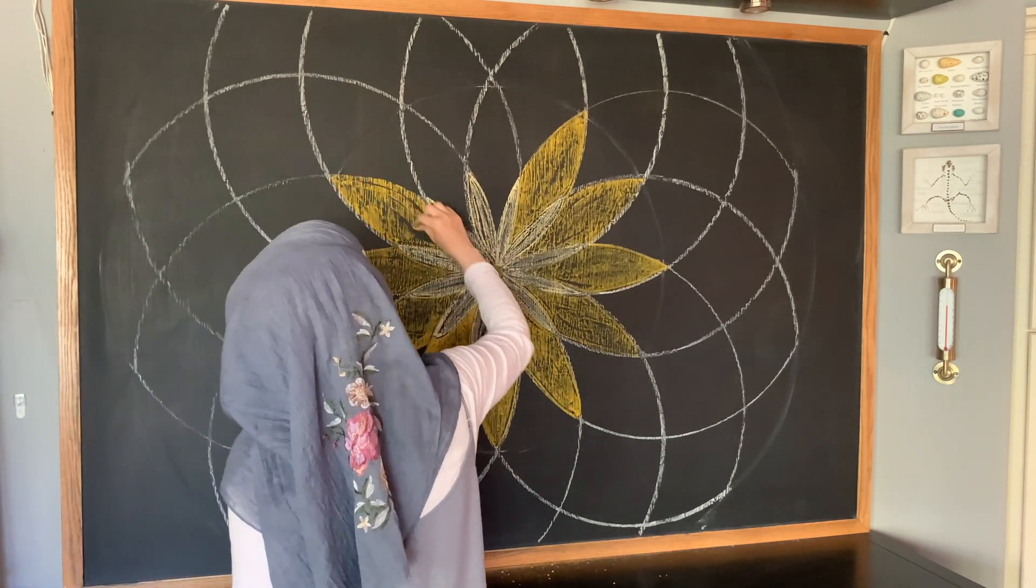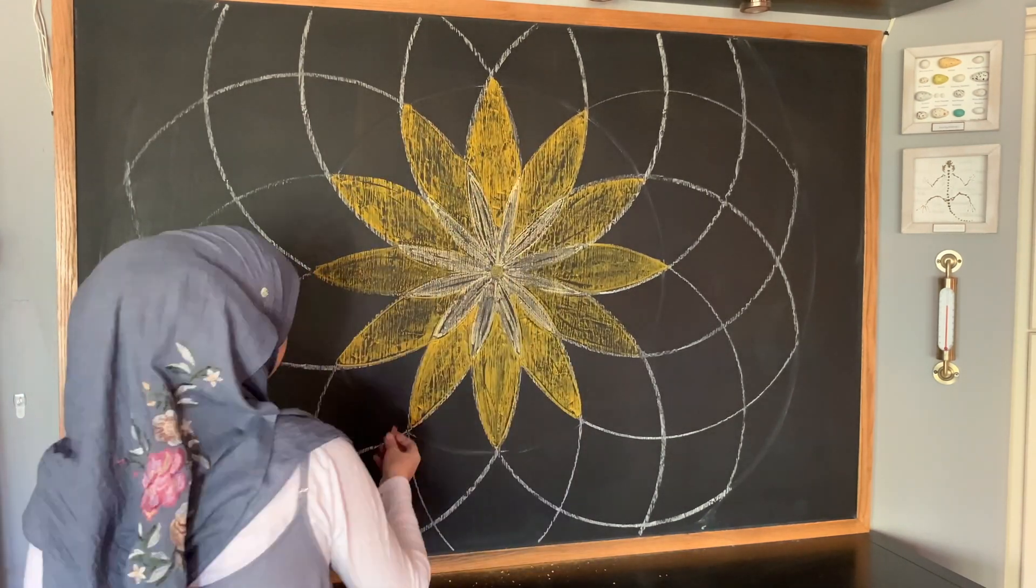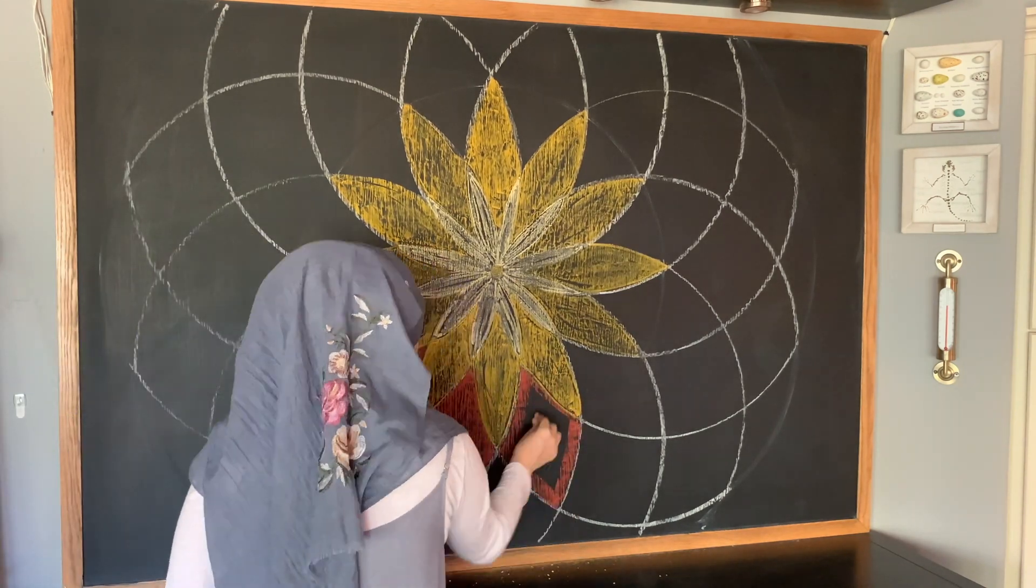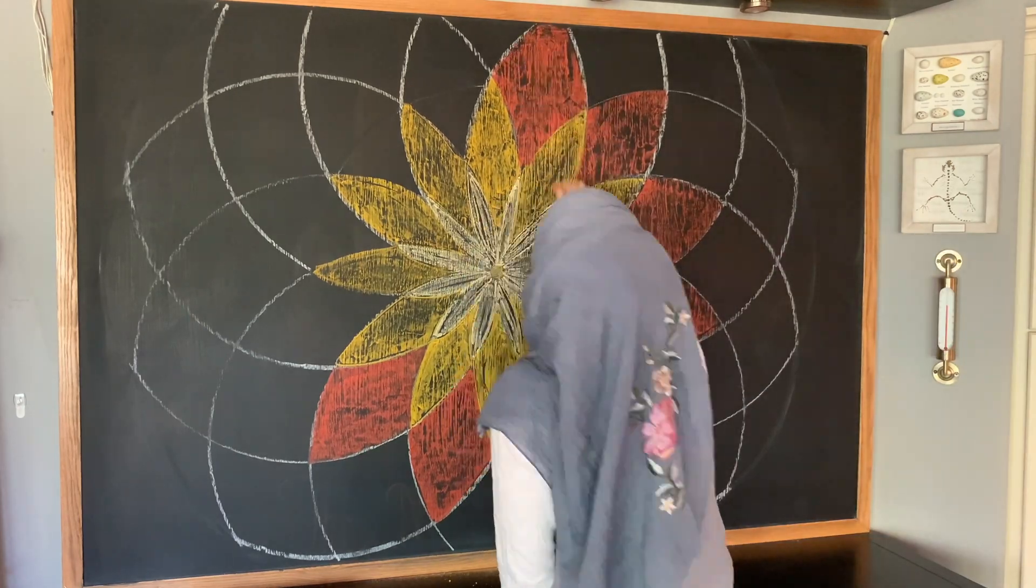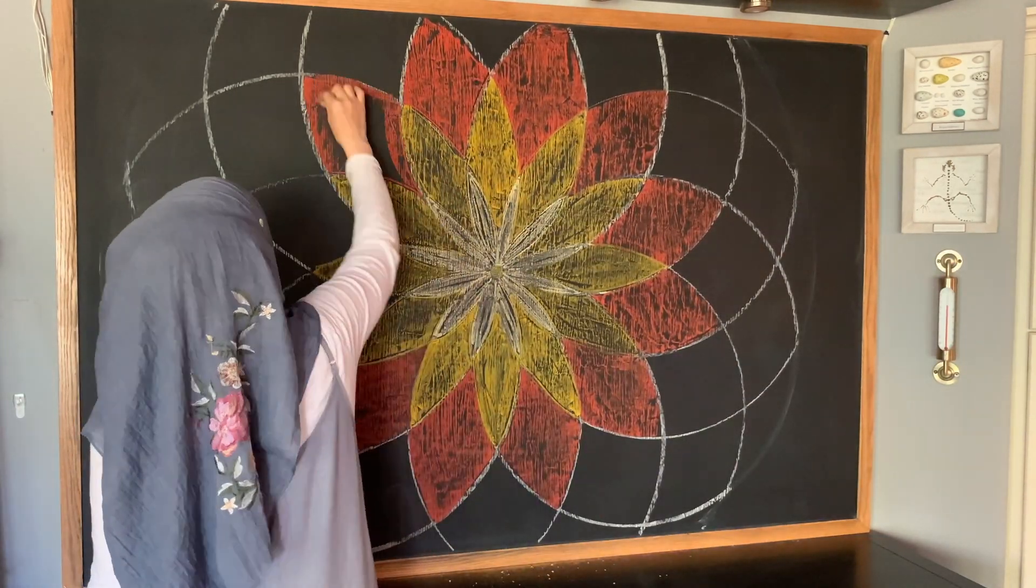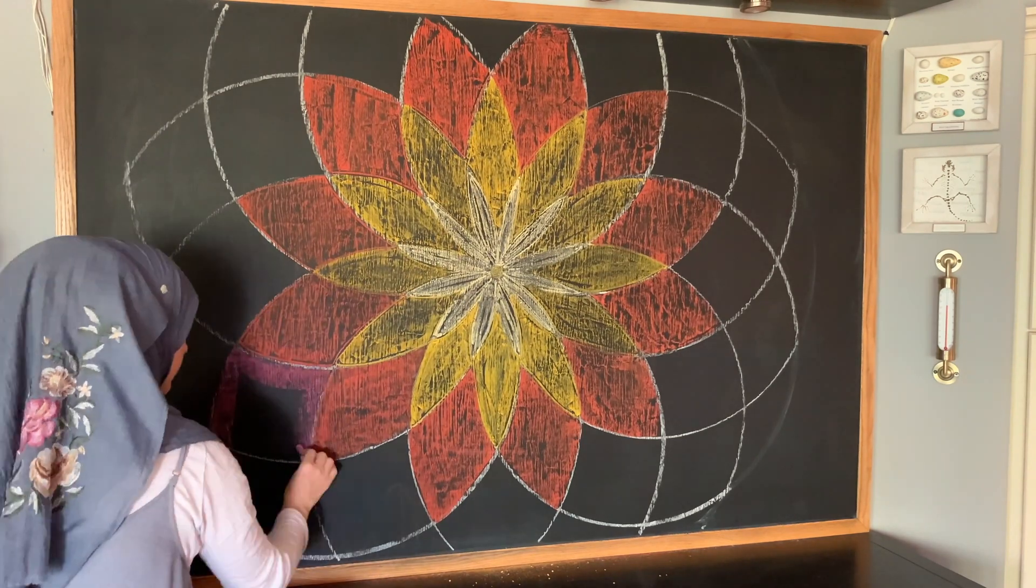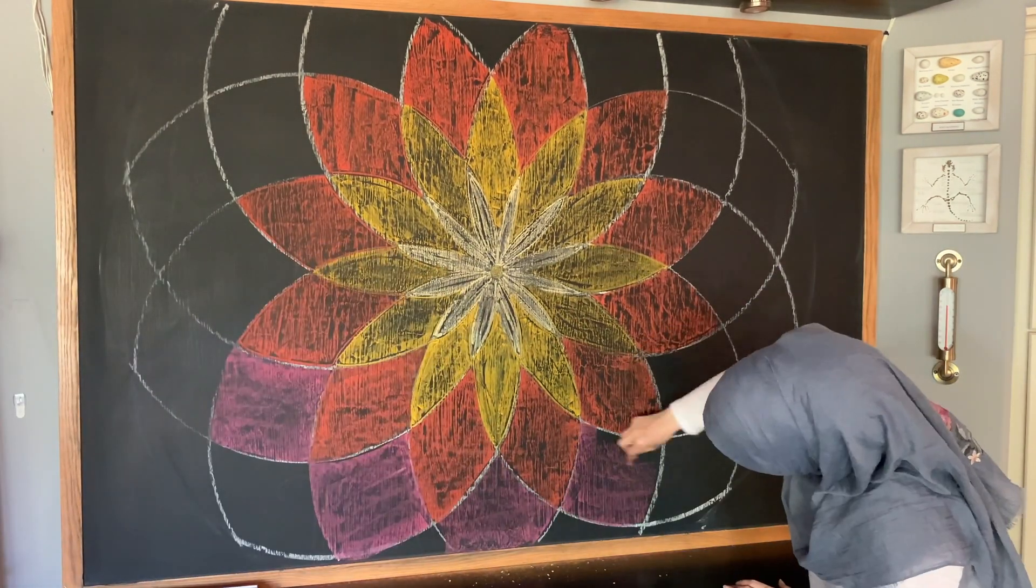I'm going to be coloring this in sort of a flower or lotus formation, so I've got a nice light color, a pale yellow in the middle, and then I'm going to be moving towards the outside of this chalk drawing with the yellow, the golden yellow, the orange, the pink, and then finally the purple.